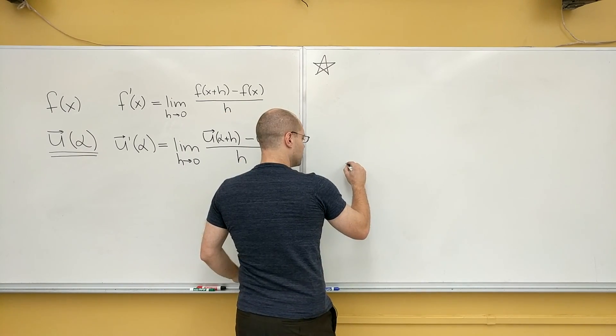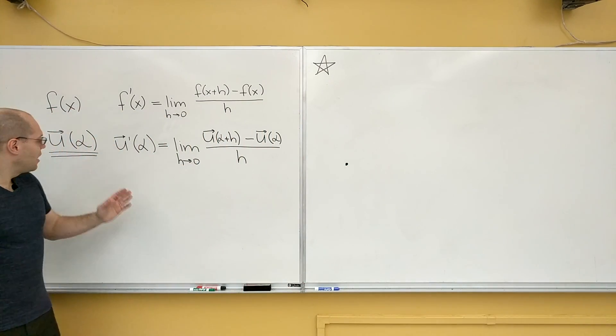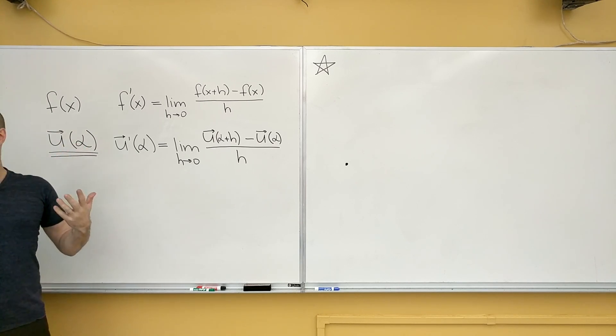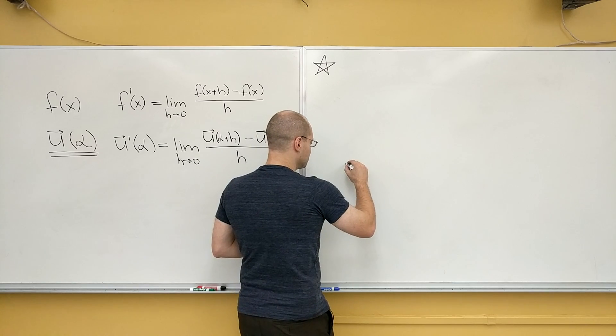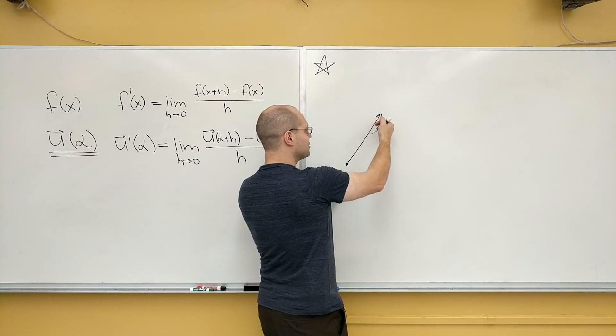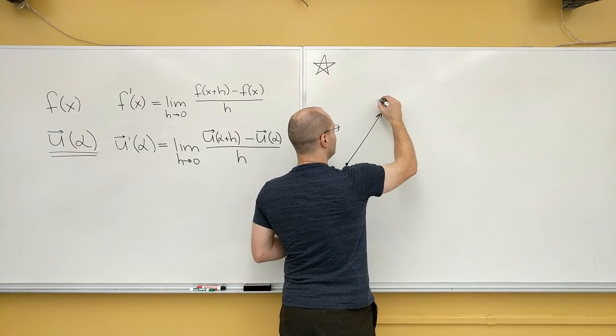Let's pick an arbitrary origin once again. And so we have U of alpha. Well, U of one, I'll start with one. I could start with zero, but it doesn't matter. I'll start with one. U of one is some vector. Let's draw it. Here it is. Here's U of one.